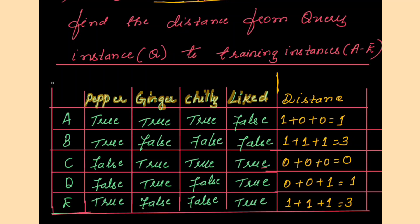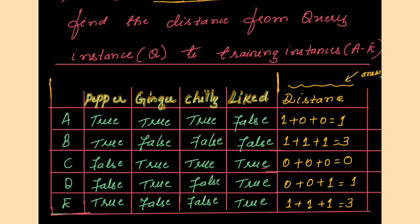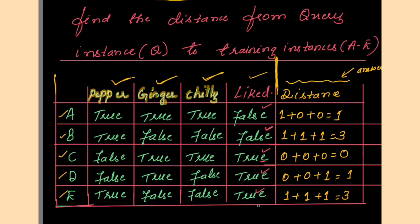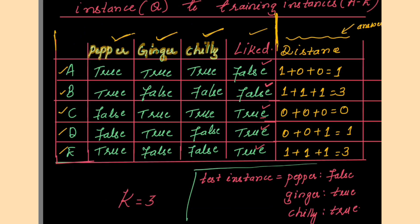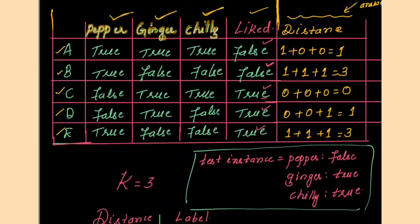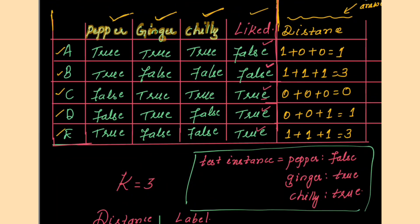In the problem statement, the dataset values are given. Whatever I have written in the last column — that is the distance values — are part of the answer. The burger flavors are pepper, ginger, and chili. The target attribute is 'liked'. Now let us check row by row. In the first row, the pepper value is true, whereas in the test instance it is false. True and false are different, so the distance computed is 1.